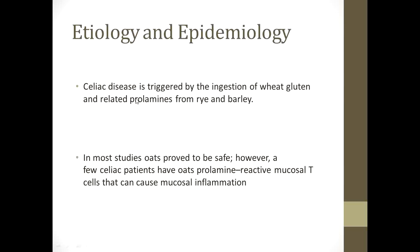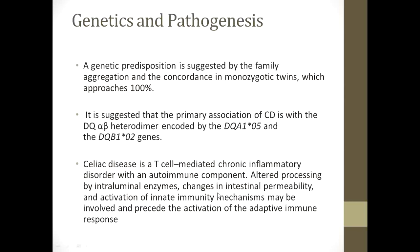Celiac disease is triggered by ingestion of wheat gluten and related prolamines from rye and barley. In most studies, oats proved to be safe; however, a few celiac patients have oats prolamine-reactive mucosal T cells that can cause mucosal inflammation.